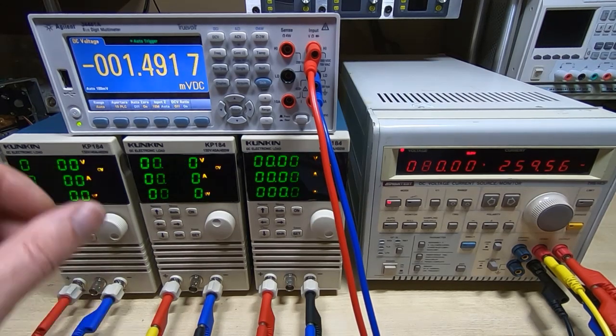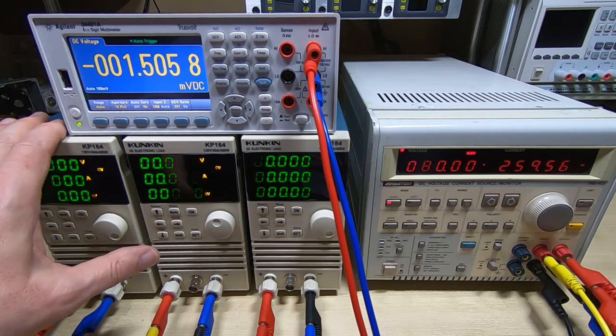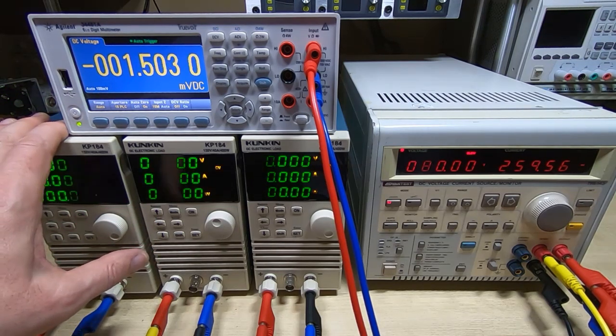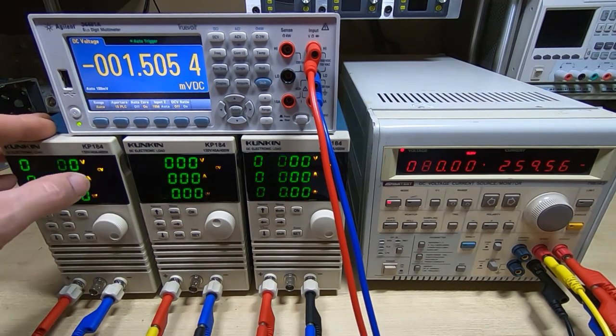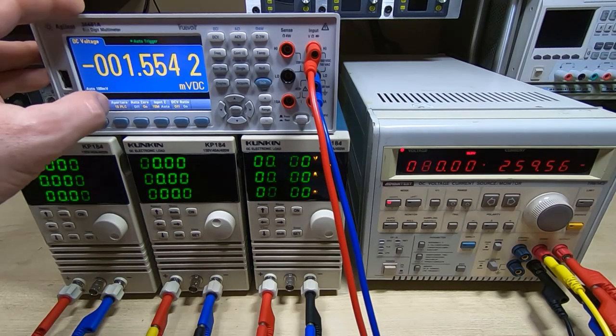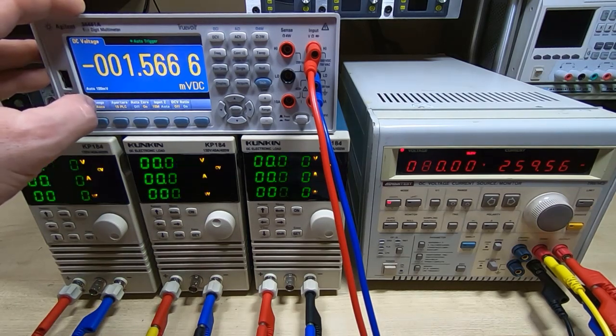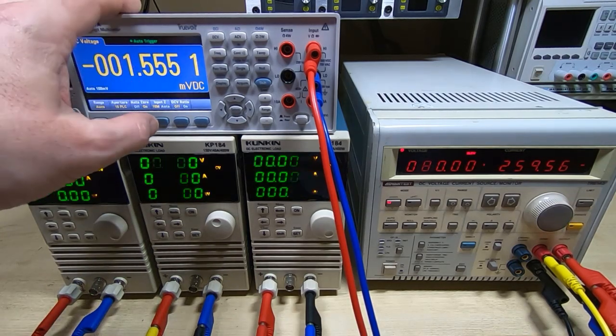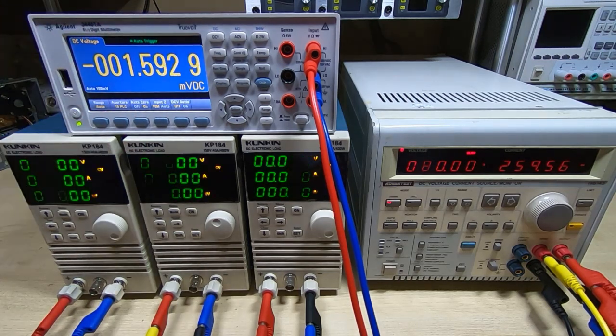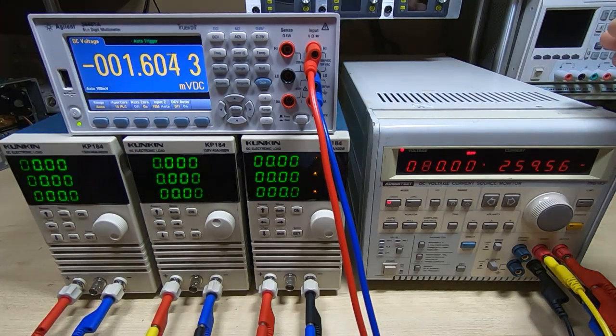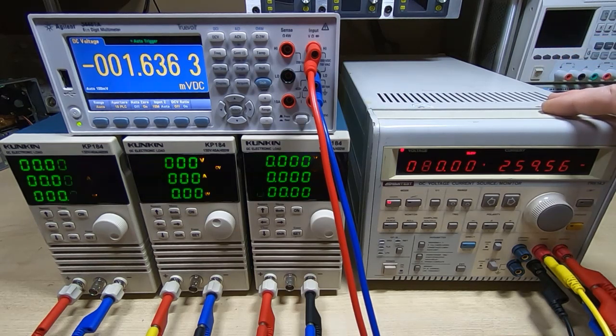The way I have these configured on the bench, I've got the three KP184s all wired in parallel. I've got the Agilent 34461A 6.5 digit bench multimeter, this is calibrated, and I thought I'd take this opportunity to show off the ADVANTEST TR6143.